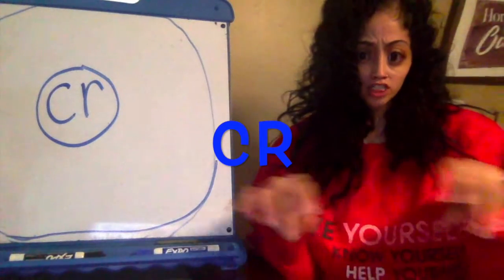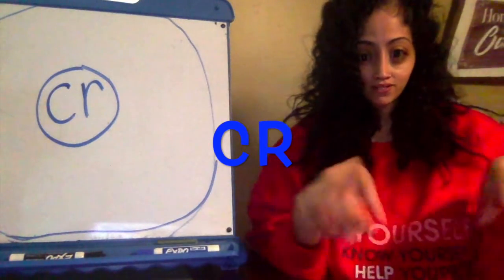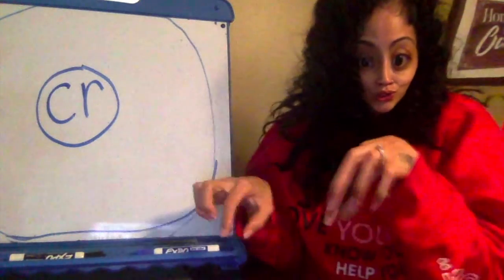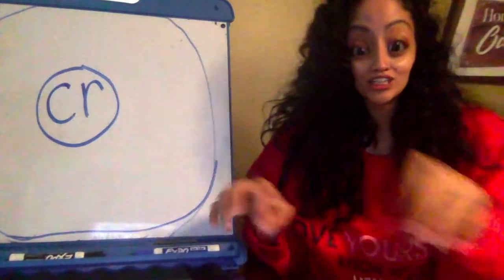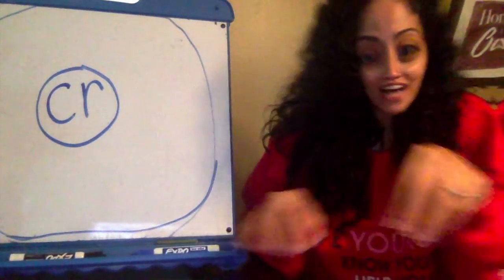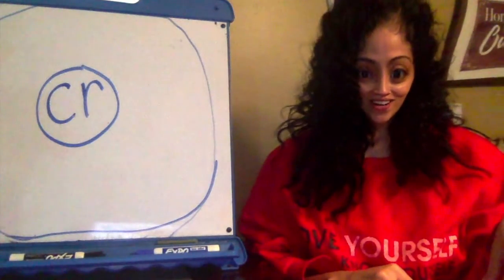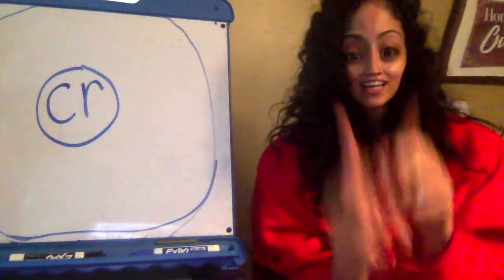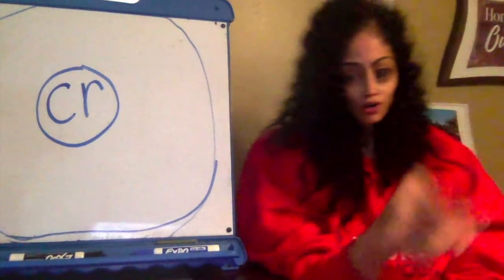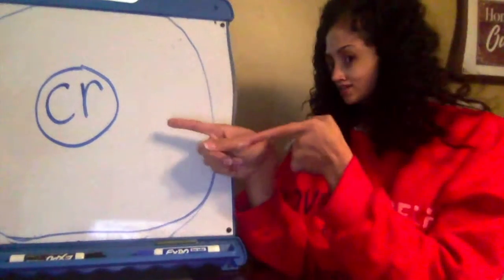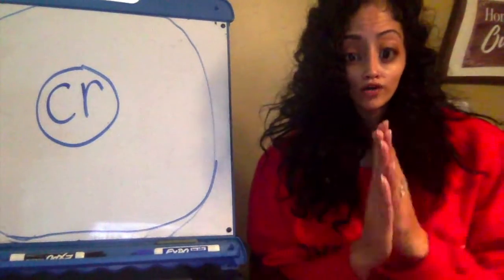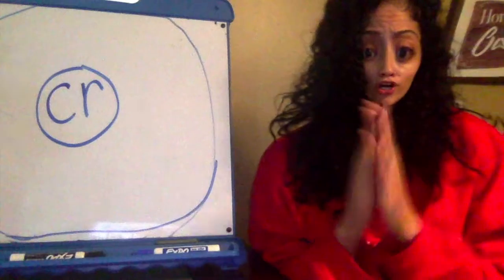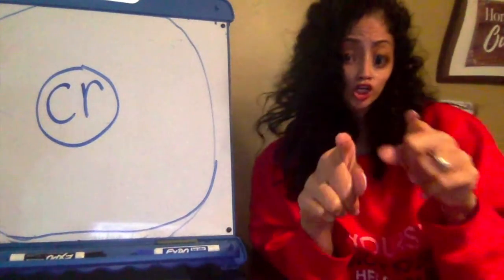CR is C-R-A-B. It's like little crabs are running. C-R-A-B. Do it with me. C-R-A-B. Awesome! Get your circle maps ready. Draw that circle. Put that C-R in the middle, and we are going to get started with those words with CR.